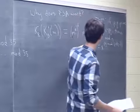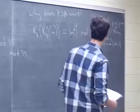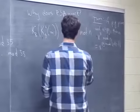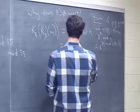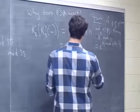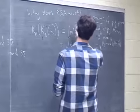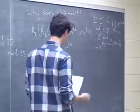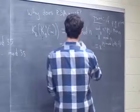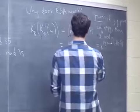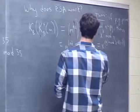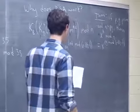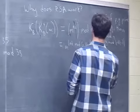Applying the theorem, we can say the result equals m raised to e×d, where we need to take that exponent mod (p−1)(q−1) — which is z. So the whole expression is m^(e·d mod z), still mod n.